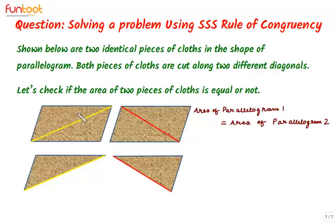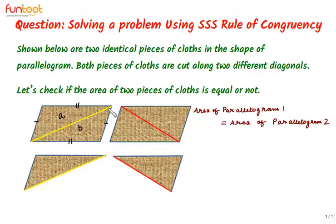In the first parallelogram, if we call this region as region A and this region as region B, we can see that these two regions are in the form of triangles, and these two triangles will be congruent by SSS. Why? Because this side is equal to this side — opposite sides of the parallelogram. For the same reason, this side is equal to this side, and the diagonal is common. So we can say that this triangle is congruent to this triangle by the SSS condition of congruency, and because these triangles are congruent, their areas will be the same. So area of region A is equal to area of region B.